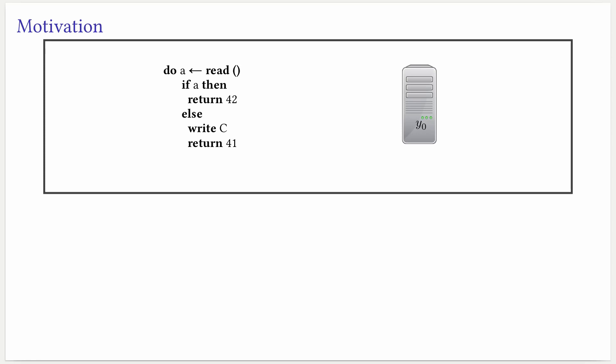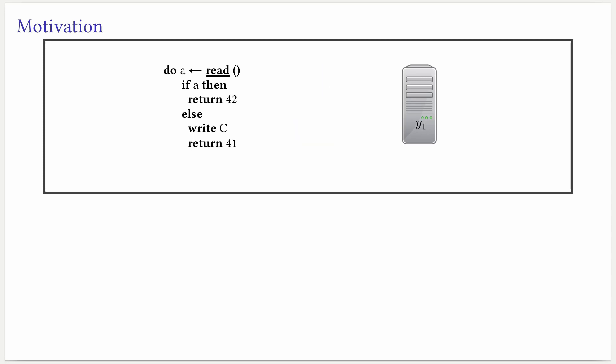On the first step, the computation on the left will need to perform the read. For that, it will send a request to the machine on the right asking to read the boolean. The machine on the right will do some processing and then respond with false in this case, and update its state to y1. The control will go back to the program, which will internally evaluate the if, and as the value was false, it will take the else branch.